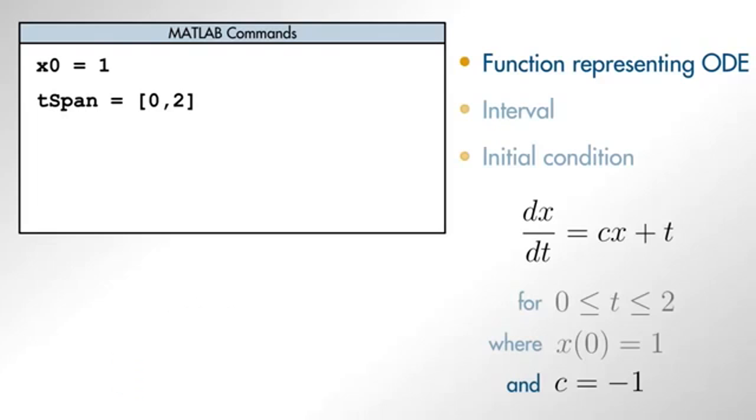In MATLAB, functions are passed to other functions using variables called function handles. There are several ways to define function handles. In this example, we will define a function handle using an anonymous function.